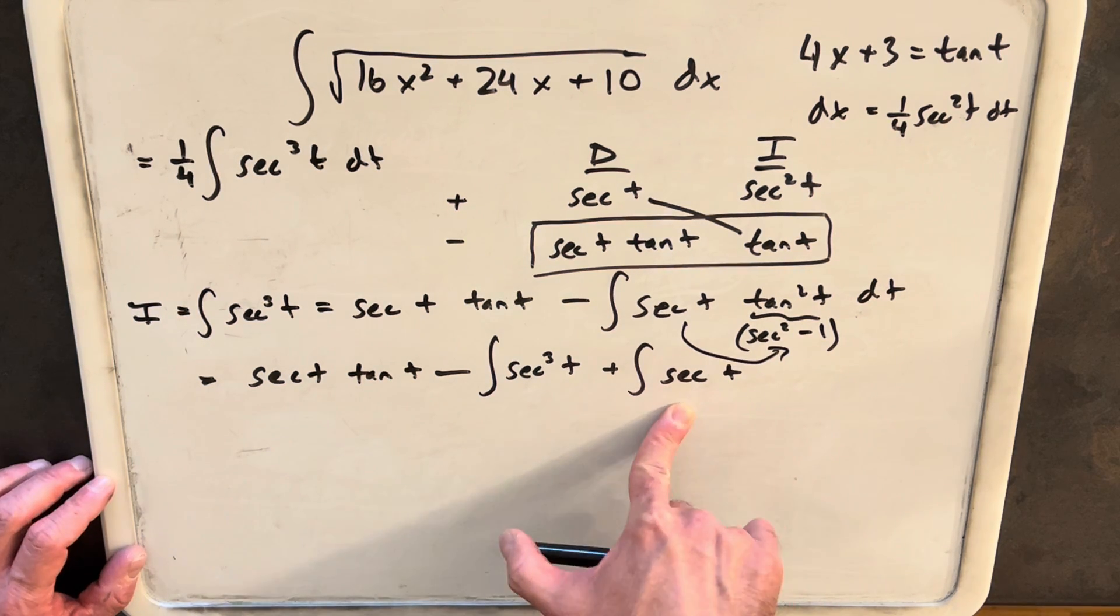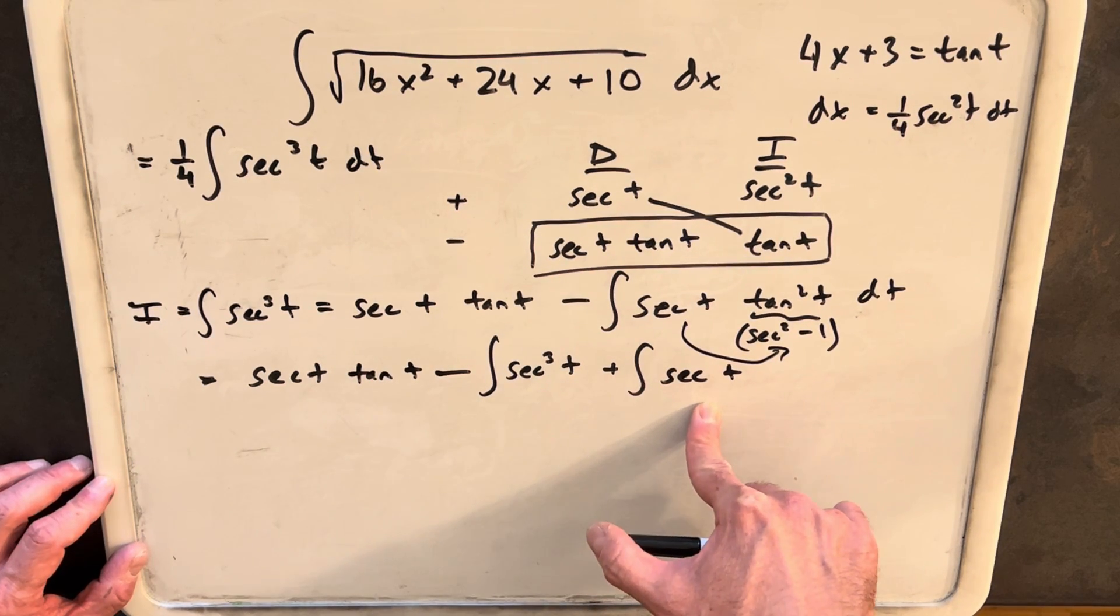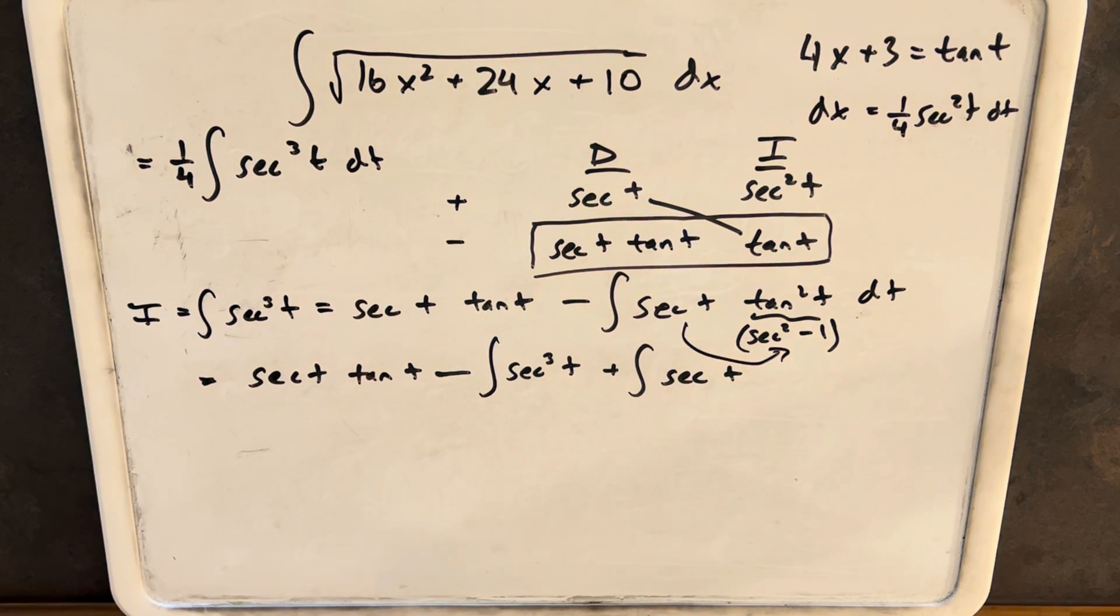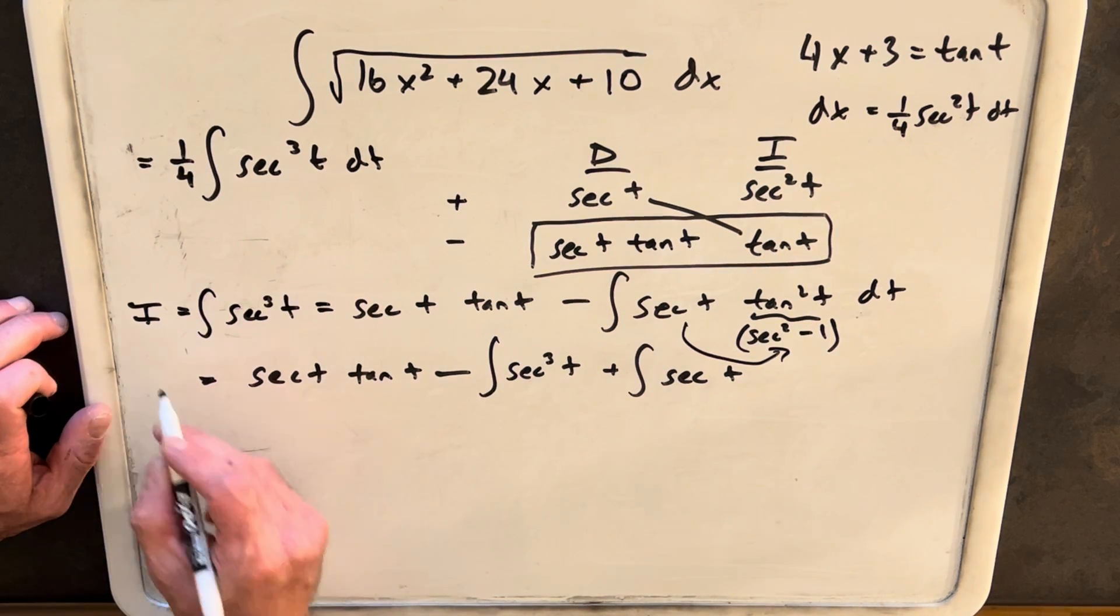This is going to be an integral of secant of t. Then this is a well-known integral. So this is actually just ln secant plus tangent.